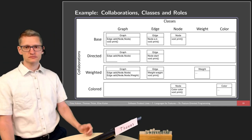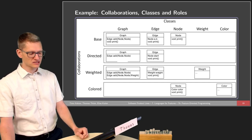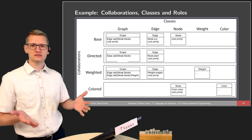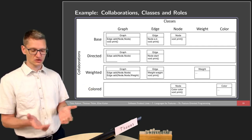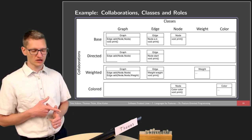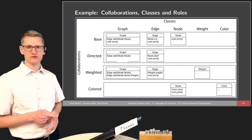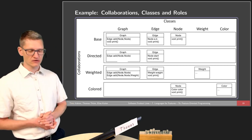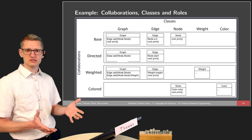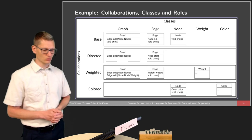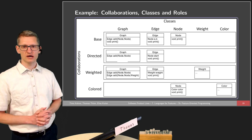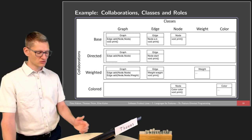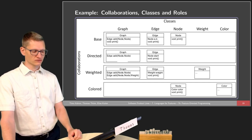The examples will be based on our graph implementation. We have two dimensions: the dimension of classes — graph, edge, node, weight, and color — and those classes collaborate with each other in certain collaborations. The collaborations in this example are: base (a base implementation of the graph library), directed (involving classes graph and edge), weighted (also involving graph and edge for weighted edges), and colored (where node and color interact). Not every collaboration needs to involve the graph class; for colored nodes, for instance, we might implement this through an interaction of node and color only.